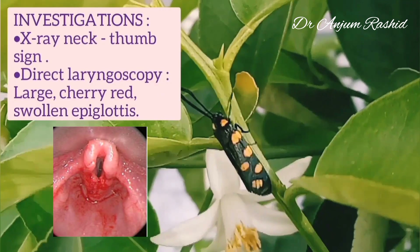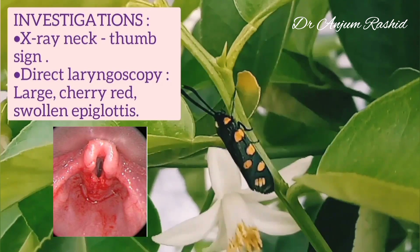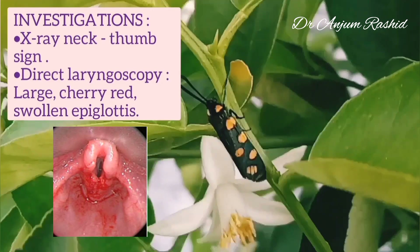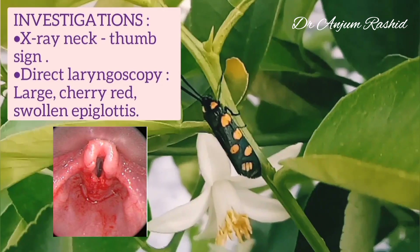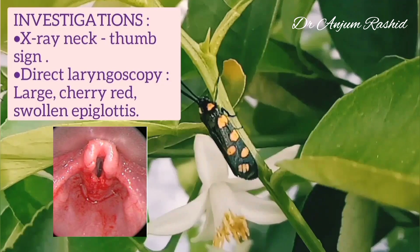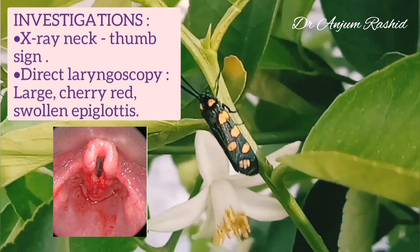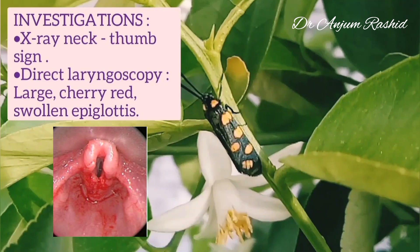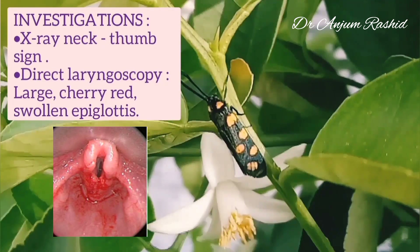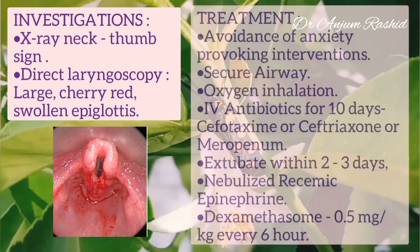Investigations: X-ray of the neck shows the thumb sign. Diagnosis is confirmed by direct laryngoscopy, which should be done after intubation and securing the airway. It shows a large, cherry-red swollen epiglottis.